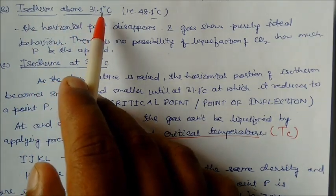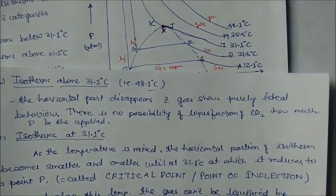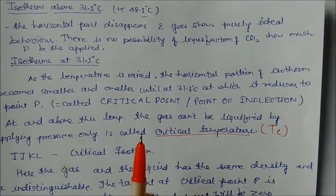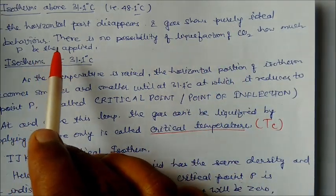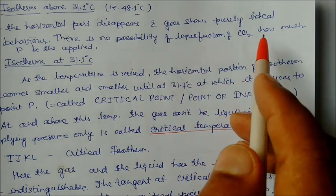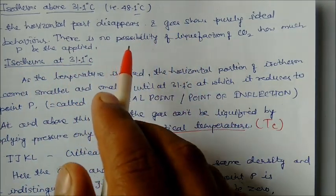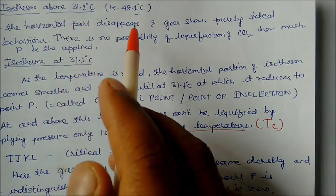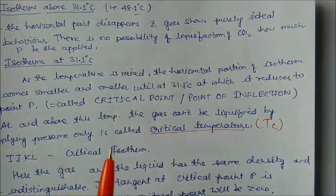For isotherms above 31.1°C — for example, 48.1°C — the horizontal part disappears completely, and the gas shows purely ideal behavior. There is no possibility of liquefaction of CO2; whatever pressure is applied, CO2 cannot be converted into liquid. Above 31.1°C, CO2 will remain as a gas regardless of the applied pressure.